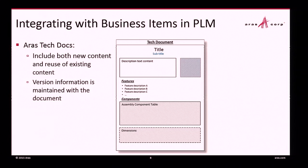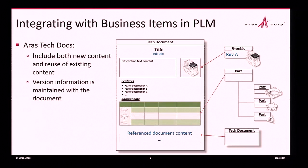When you create a document, some content is new to the document itself — text you're typing in, lists you're adding. But there is also the ability to reference other items within Innovator. Graphics, for example, are most likely being created by your illustrators — they take screenshots of your software or pictures of your manufacturing process and store them in Innovator. You may also have part information that your engineers or CAD users are originating, which you can pull in directly.